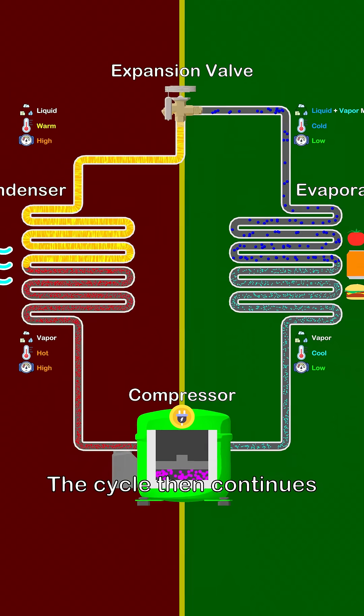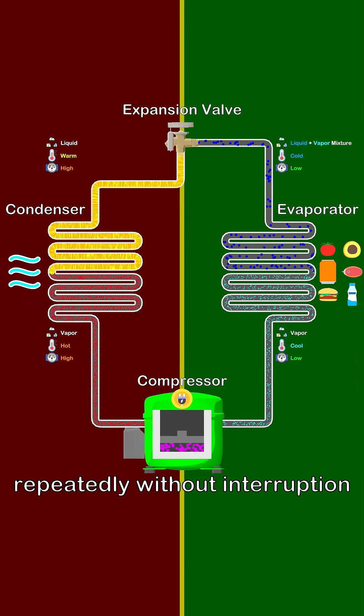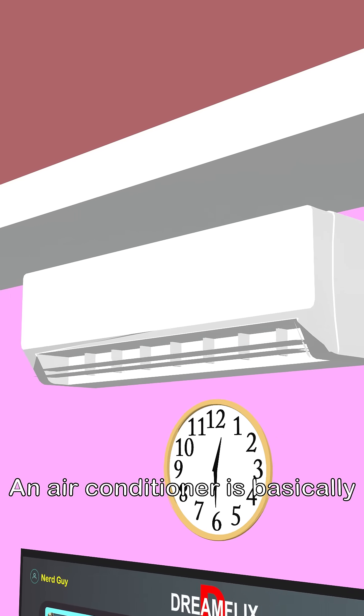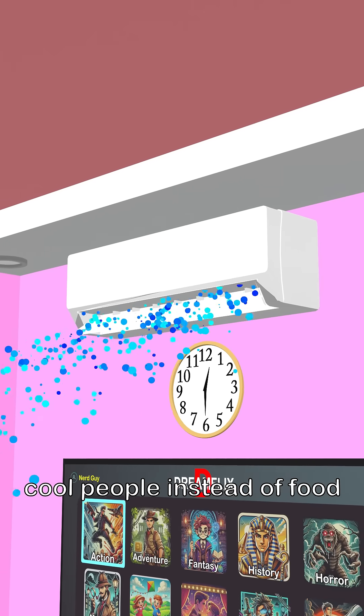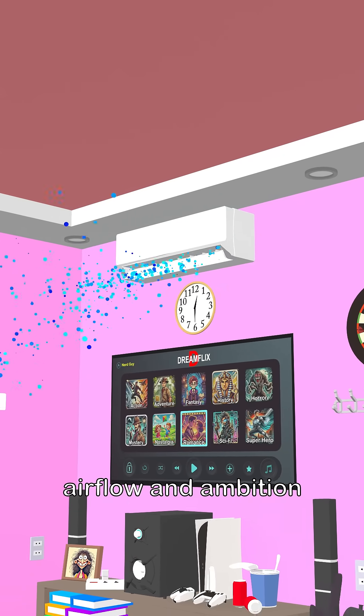The cycle then continues repeatedly, without interruption. An air conditioner is basically a refrigerator that decided to cool people instead of food. Same cycle, same components, just more airflow and ambition.